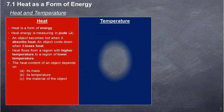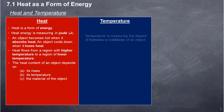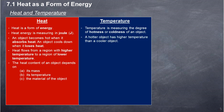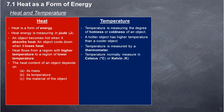Temperature is the measure of the degree of hotness or coldness of an object. A hotter object has a higher temperature than a cooler object. Temperature is measured by a thermometer. Temperature is normally measured in Celsius (°C) or Kelvin (K).